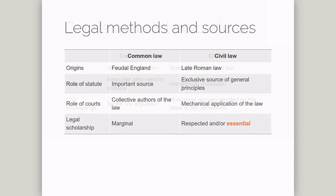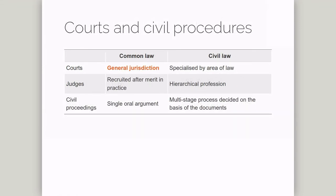In terms of courts and procedure, common law courts have historically been generalist courts — the law is just the law — and so the high court can, in principle, deal with any kind of case. In code law systems, however, the structure of the court system more closely follows the different codes, and so you have separate criminal, civil, and administrative courts.